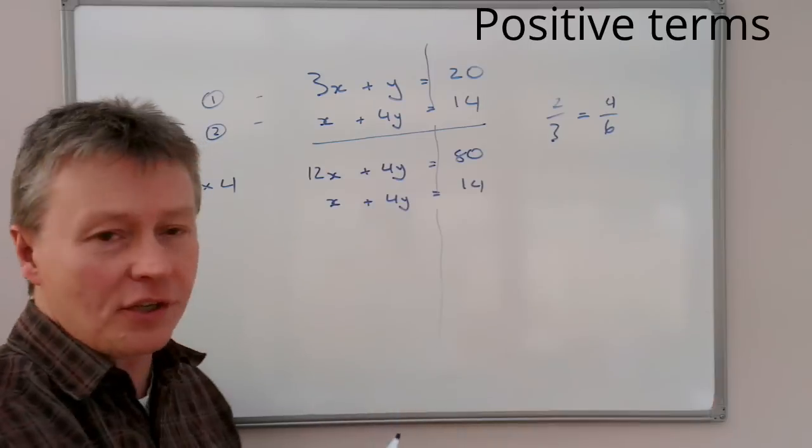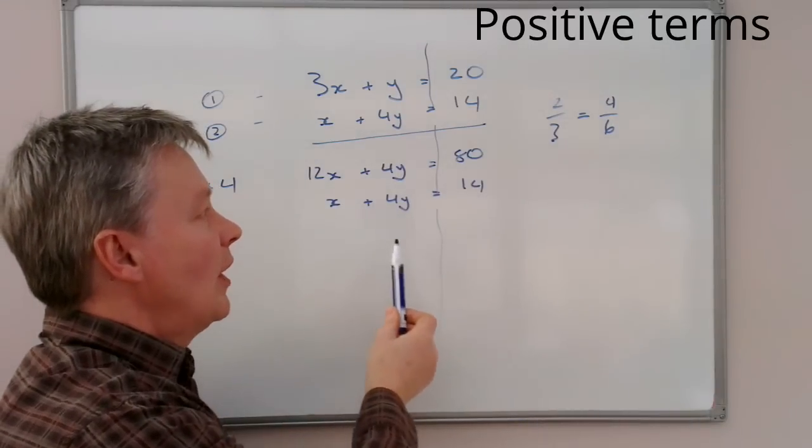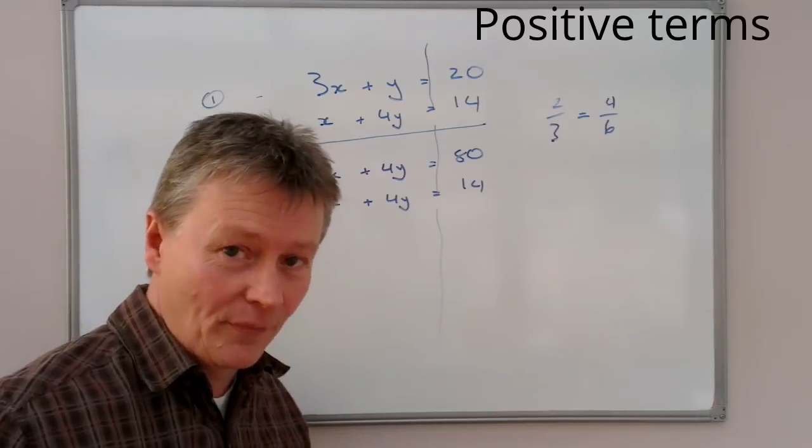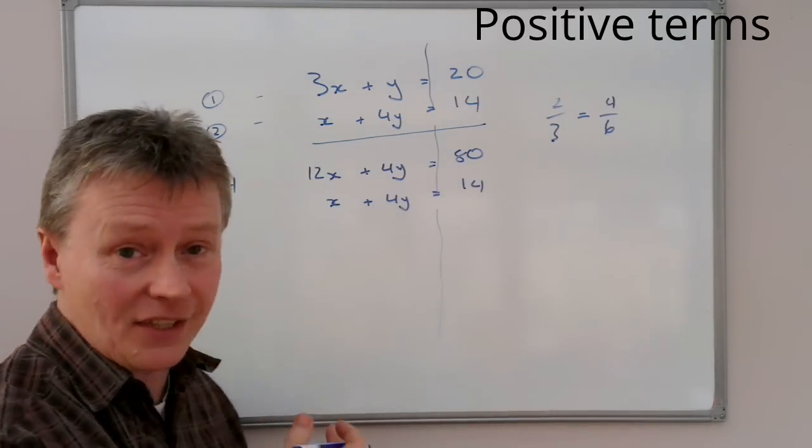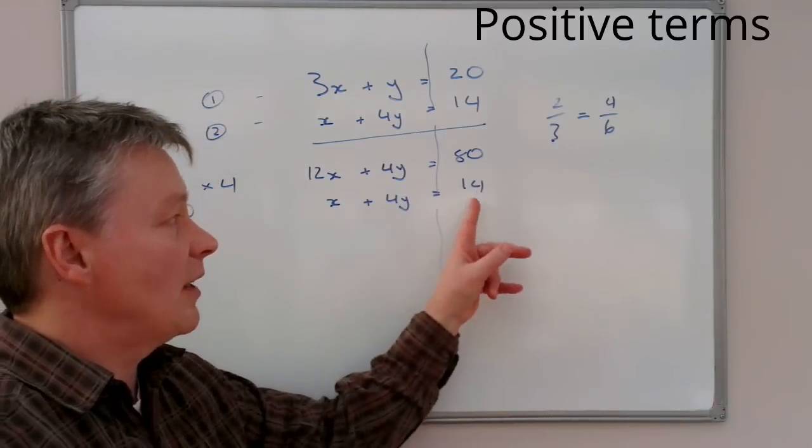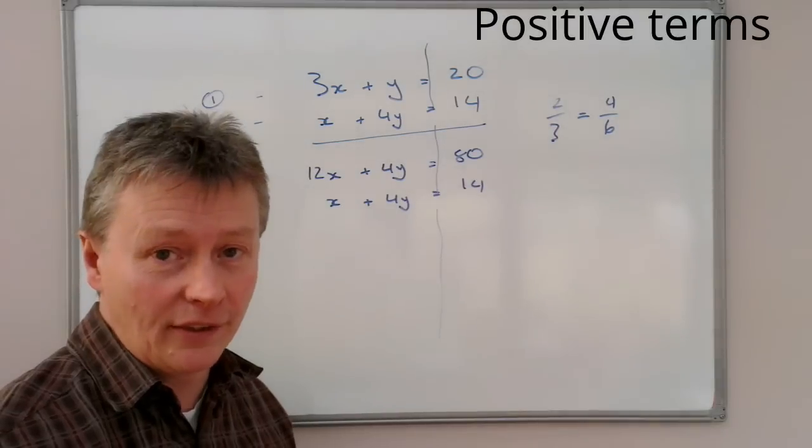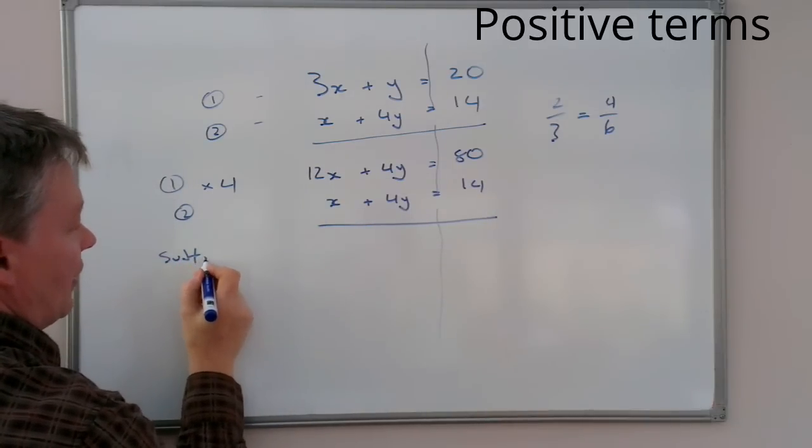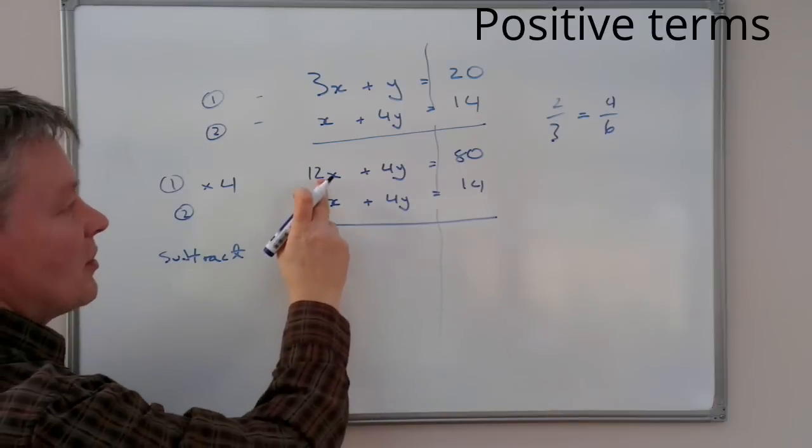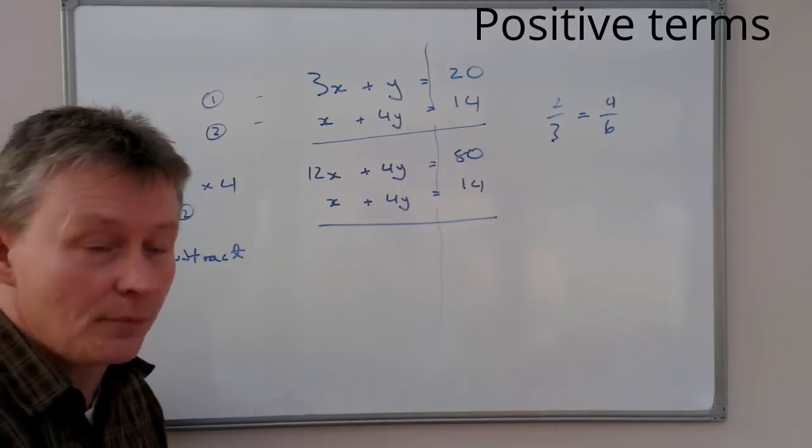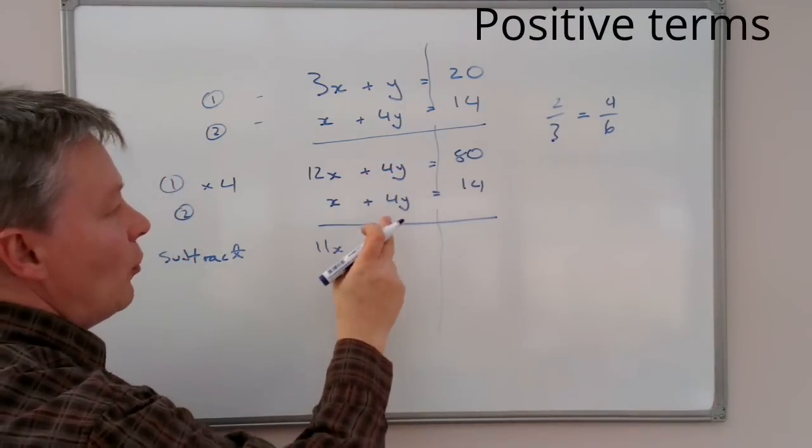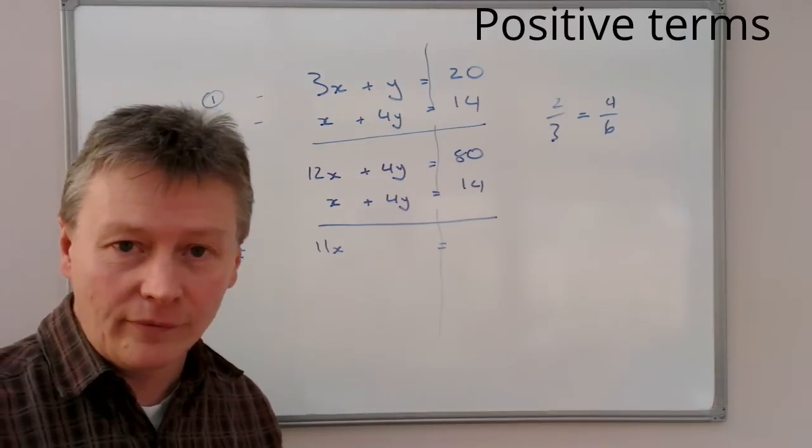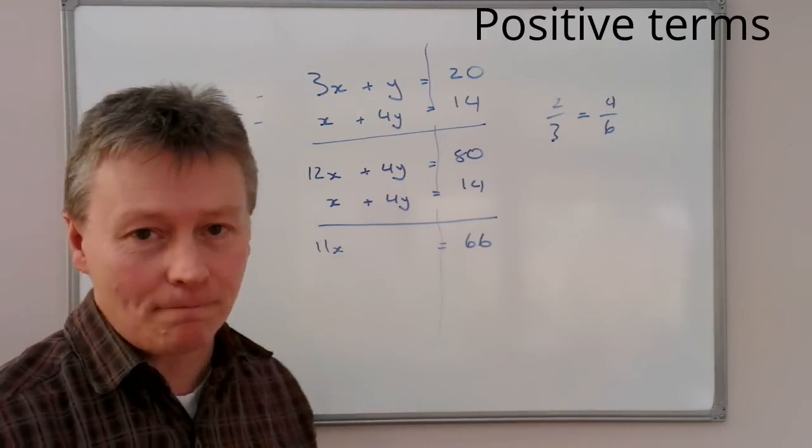So, now I'm in a position where if I subtract this equation from this top equation, then 4 take away 4 will give me 0. Which is great, because then I'm left with the x value and a number value there, which means I can then calculate the value of x. So, what we'll do is I'm going to subtract, and again I'll just make a note in the margin here. So, subtract 12x take away x is going to be 11x. 4y take away 4y is nothing.